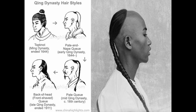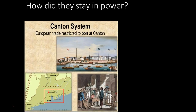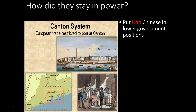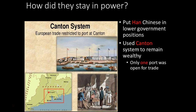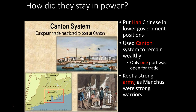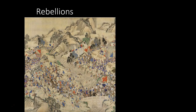The Manchus even required Han people to wear pigtails as a mark of identity, making them dress differently so you could tell who was who. The Canton System is brilliant — there is one port through which all trade flows, everything coming in is taxed, Han Chinese collect these taxes, and those on top stay very wealthy, supporting the emperor. With money you can pay a strong army, and that system keeps them around for many years.